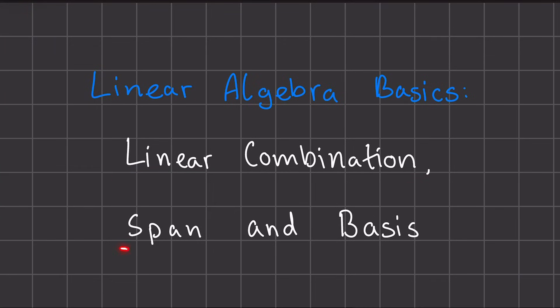Concepts like linear combination, span and basis can feel abstract when you first meet them, but with a few simple examples in 3D and 2D, they become much easier to understand. In this video, we'll walk through the core ideas behind these terms, so you have a solid foundation for the rest of linear algebra.